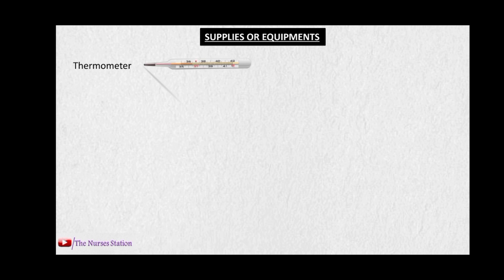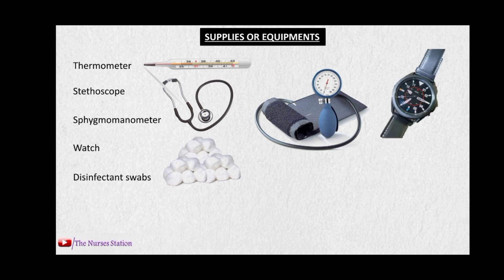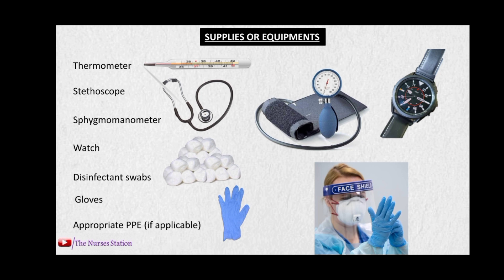For assessing the vital signs, we need some supplies and equipment: thermometers, stethoscope, sphygmomanometer or blood pressure apparatus, a watch, disinfectant swabs, gloves, and other appropriate personal protective equipment if the patient is contagious or if there is a risk of spreading infection to the healthcare worker.